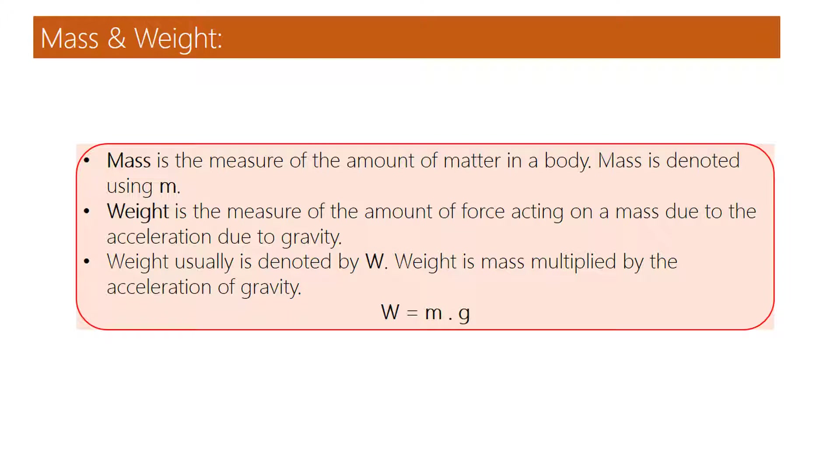Weight is usually denoted by W. Weight is mass multiplied by the acceleration of gravity. W is equal to M into G.